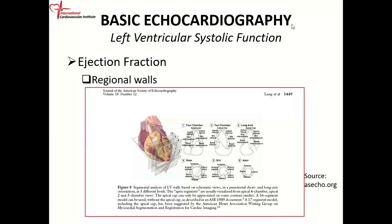When we look at the heart, we look at it in regional walls or segments. The different segments usually tell you which blood vessel is supplying that area. If we take the heart and bread-loaf it into short axis, we cut from the apex, then go to the mid-cavity level where the papillary muscle is, and then to the base where the mitral valve is. This gives us three cross-sectional levels: the apex, the mid-cavity level, and the base.